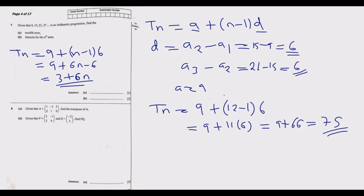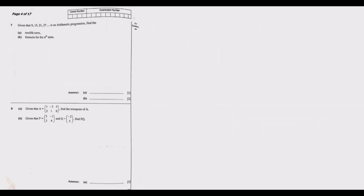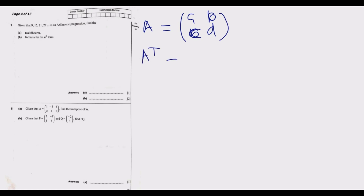Now let us move to question 8. Question 8 gives matrix A as a 2 by 3 matrix and asks us to find the transpose of A. The principle for finding the transpose is that you swap the rows and columns. So elements that were in the rows are placed into columns.